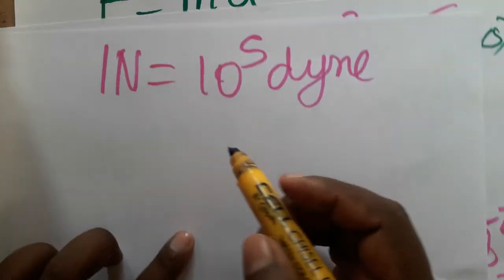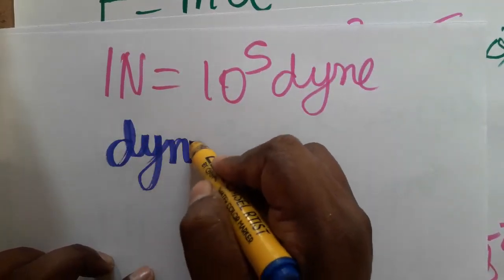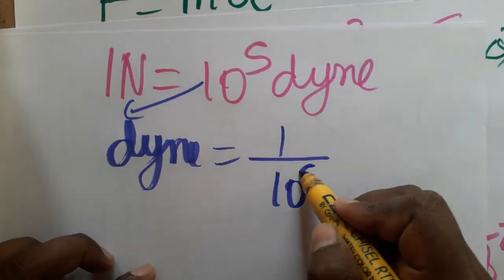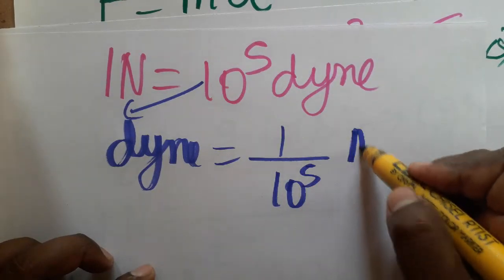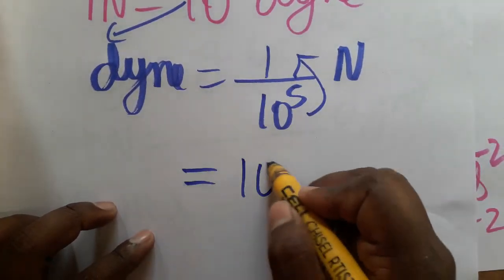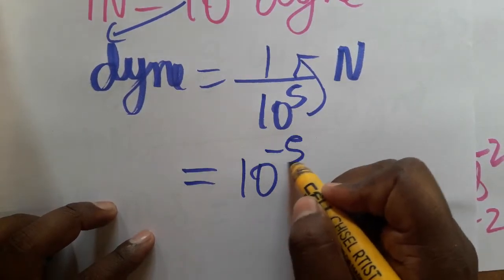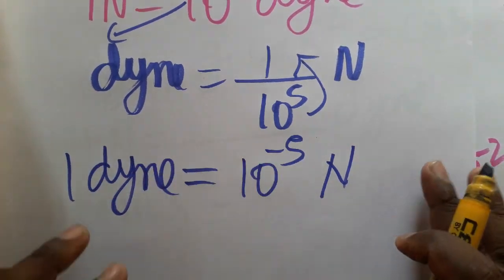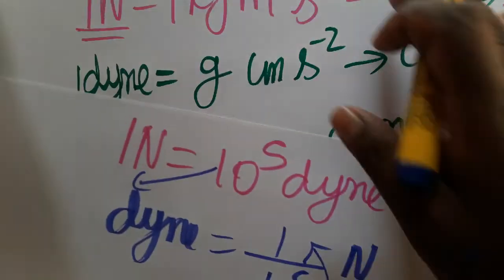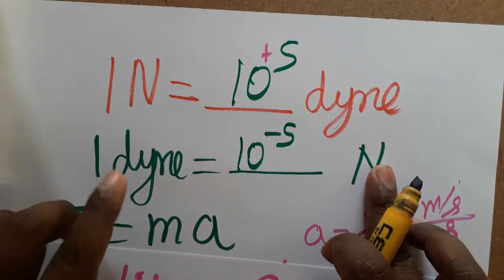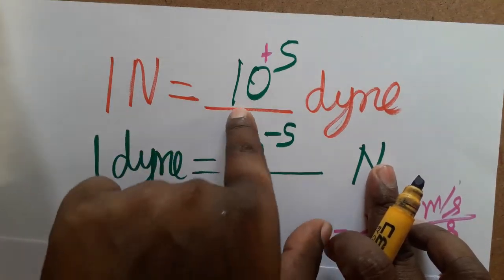Now for the opposite: 1 dyne equals how many newton? From 1 newton = 10⁵ dyne, we bring 10⁵ to the denominator: 1 dyne = 1/10⁵ newton. Moving it to the numerator changes the sign of the power, giving 1 dyne = 10⁻⁵ newton.